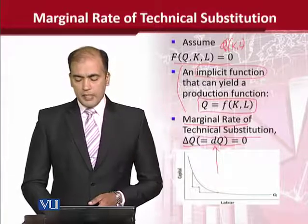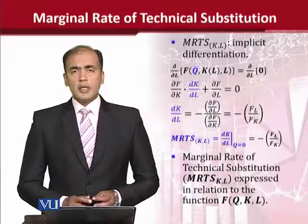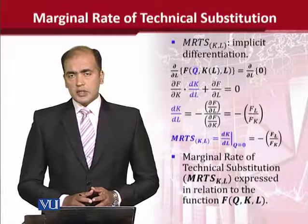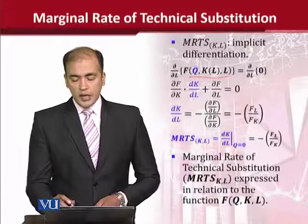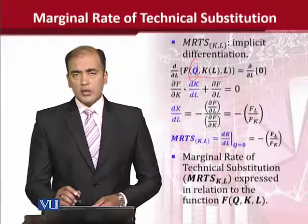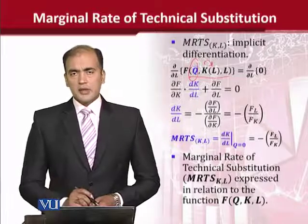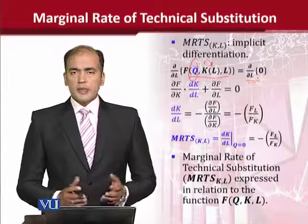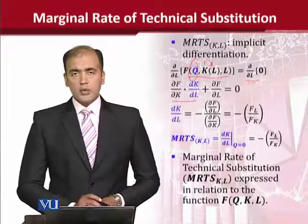What we see here is the application of implicit differentiation on the production function, which has three variables: output, capital, and labor. However, since output is kept constant as we are talking about an isoquant, we make capital dependent on labor to create a chain dependence. On the right-hand side, when we calculate the derivative, the answer will be 0. The chain dependence is now expanded with the help of the chain rule of differentiation.